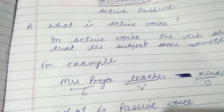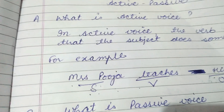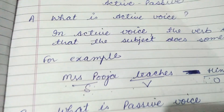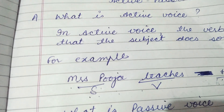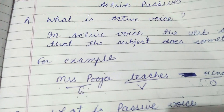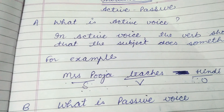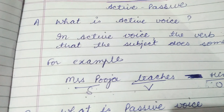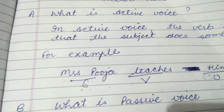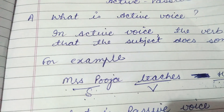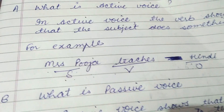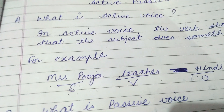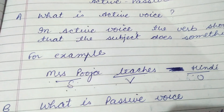In this sentence, Mrs. Pooja is the subject. What is she doing? Teaching. What? Hindi. So Mrs. Pooja is the subject, 'teach' is the verb, and Hindi is the object — because it is receiving the effect of the action which has been done by Mrs. Pooja.